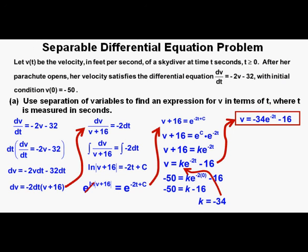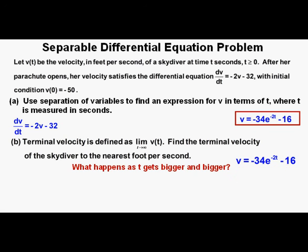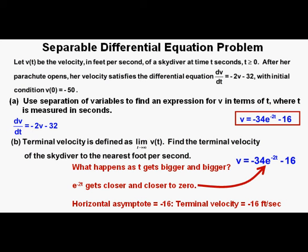Having solved Part A, we bring in Part B. Terminal velocity is defined as the limit as t approaches infinity of v of t. Find the terminal velocity of the skydiver to the nearest foot per second. Looking at our velocity equation, v equals negative 34e to the power of negative 2t minus 16: as t gets bigger and bigger, e to the negative 2t gets closer and closer to zero. This means the function has a horizontal asymptote of v equals negative 16, which is our terminal velocity of negative 16 feet per second.